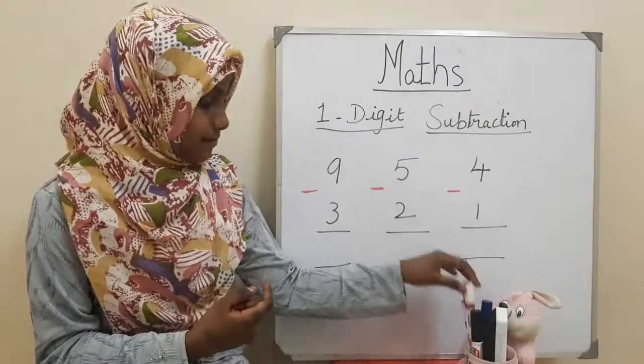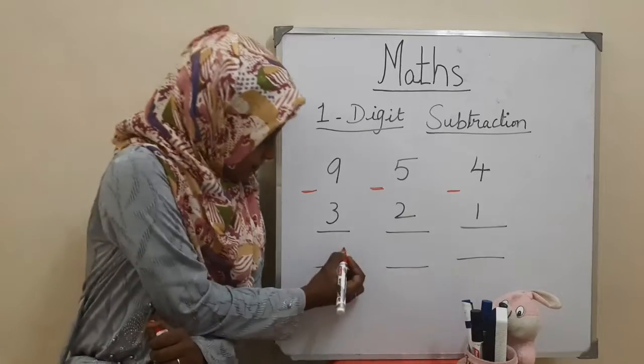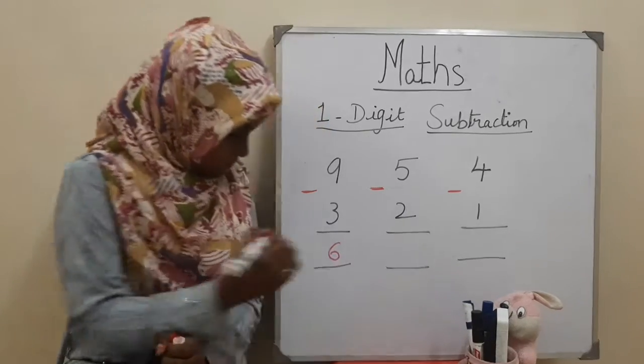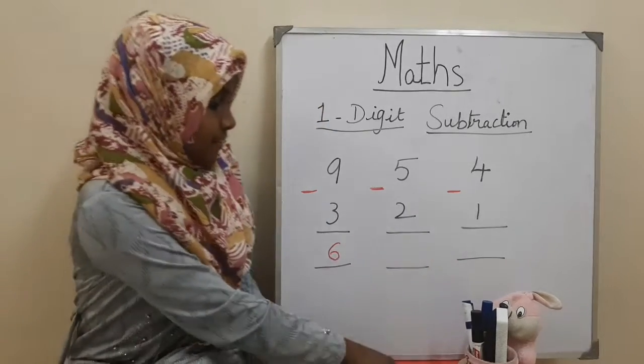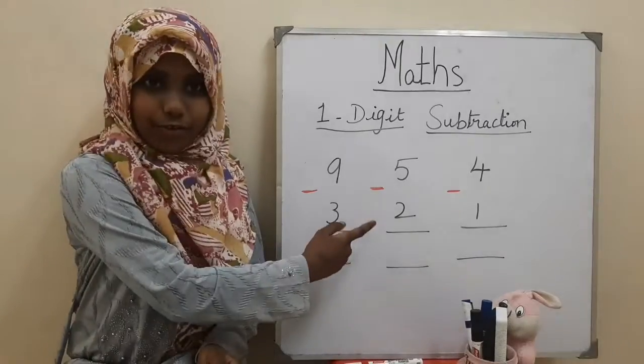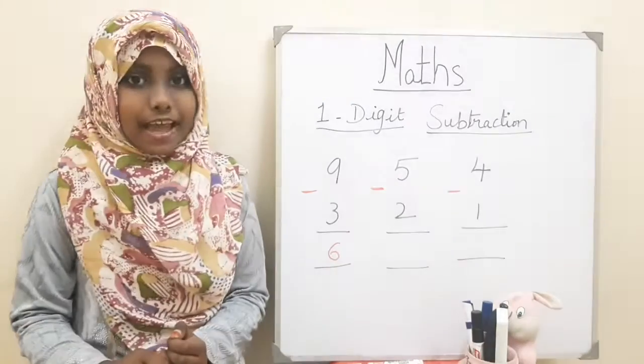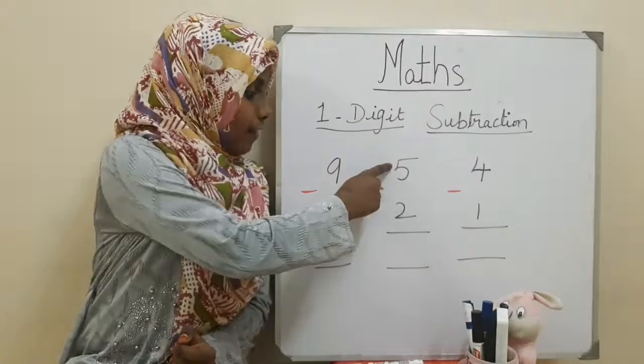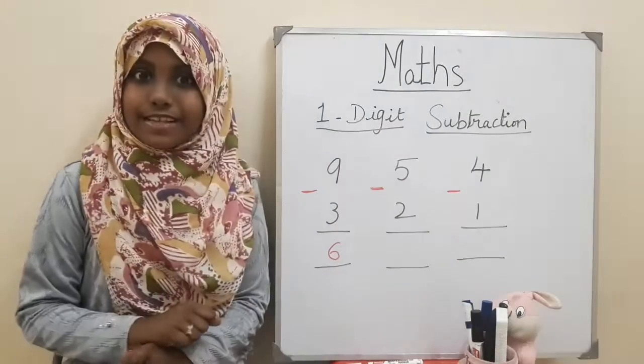Now let us go to the second sum, and the second sum is five minus two. So let us see the story.